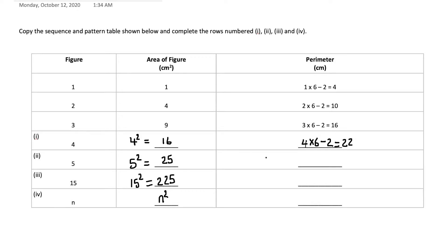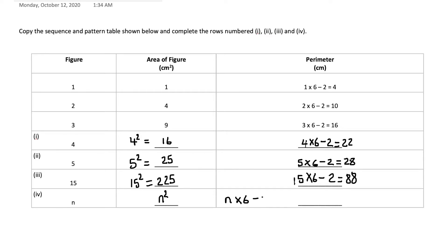Following the same concept, when the figure is 5 it's going to be 5 times 6 minus 2, which equals 28. When the figure is 15, it's going to be 15 times 6 minus 2, which equals 88. For the nth figure, because we don't know the exact value we write n, and since 6 is constant it's n times 6 minus 2, which gives us 6n minus 2 as our final answer.